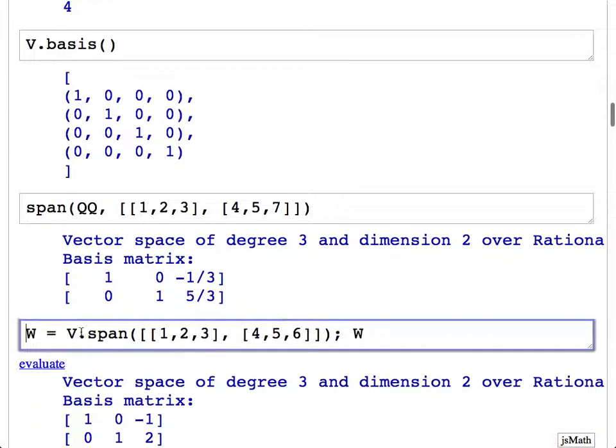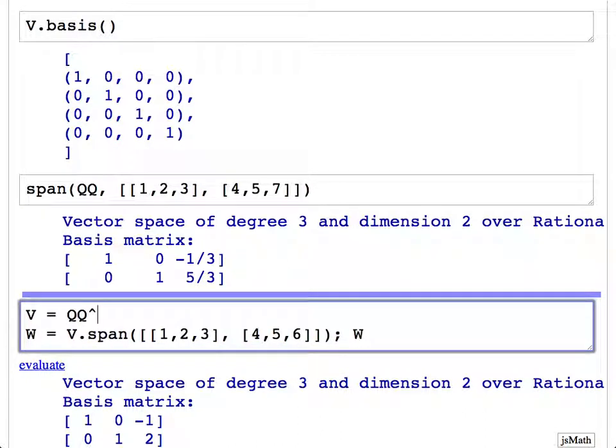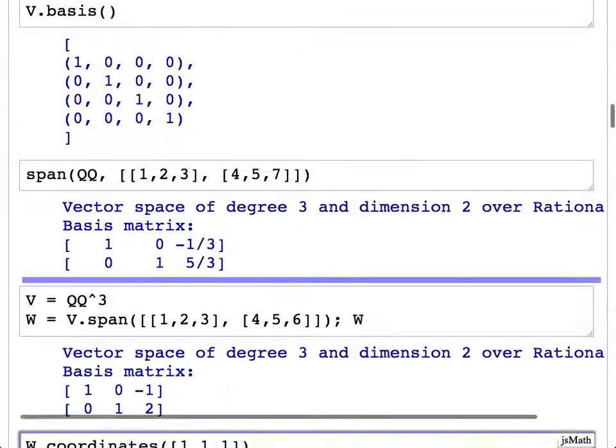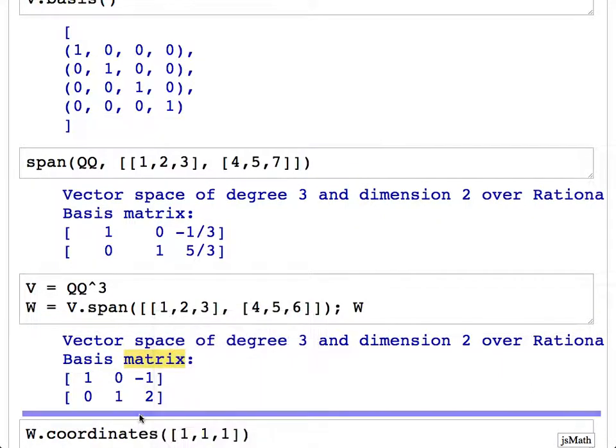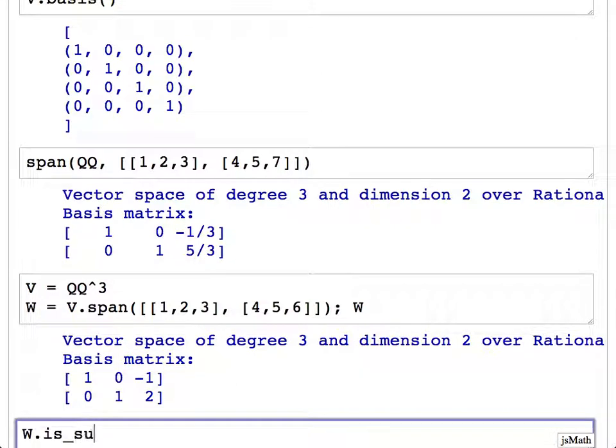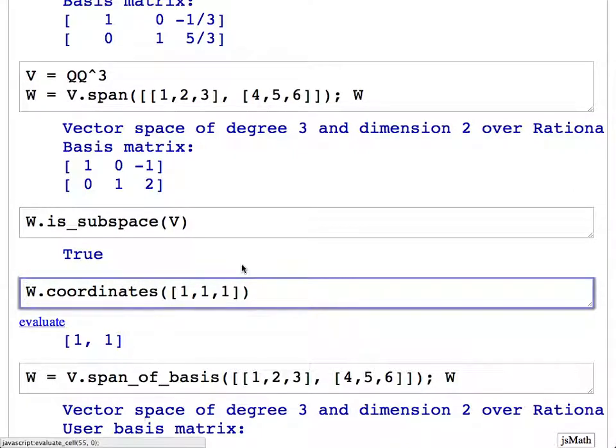Given an explicit vector space, you can ask for the span of some vectors inside that space. Let me change v to be Q3 again. This gives us this subspace of v. There's the is_subspace command. You can do w.is_subspace(v). You could define several different subspaces of a common ambient vector space and ask if one is a subspace of the other. That could be useful.